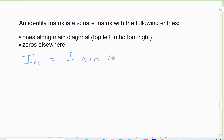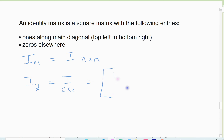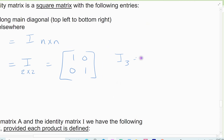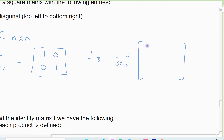It has n rows by n columns. So if I have I sub 2, that means it's an identity 2 by 2 matrix — 1s along the diagonal, 0 everywhere else. That's what we mean by the identity matrix. And I sub 3 would be a 3 by 3 identity matrix, again with a diagonal of 1s and 0 everywhere else.